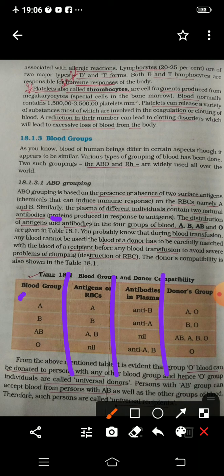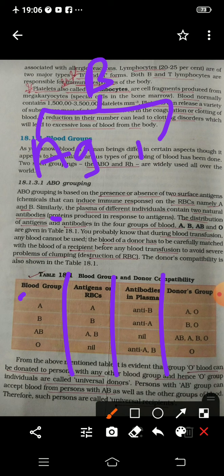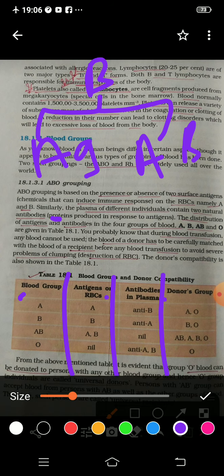Here is blood group A. Blood group A has antigen A. If you have blood group A, you have antigen A and antibody B. If you have blood group B, you have antigen B and antibody A.